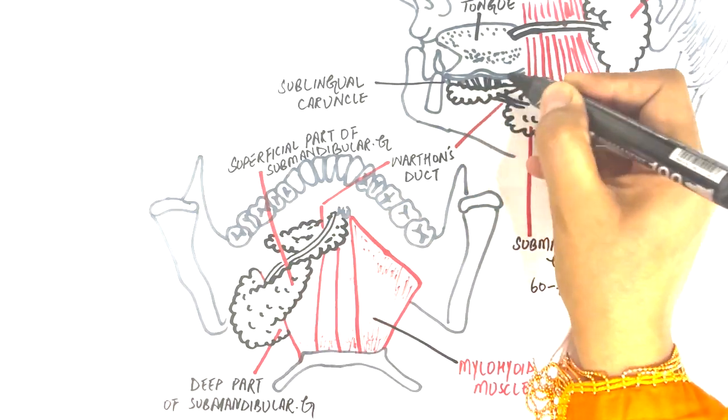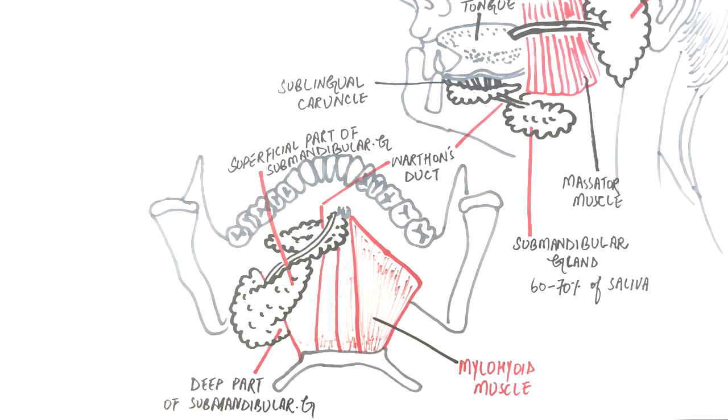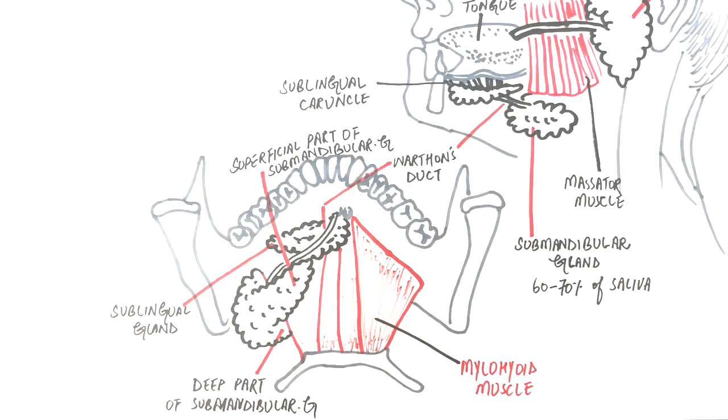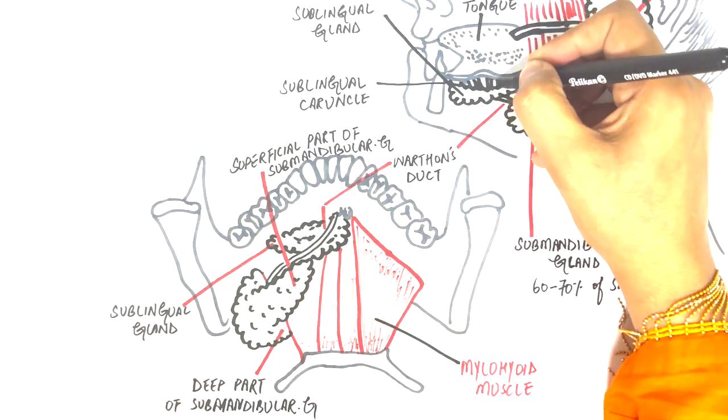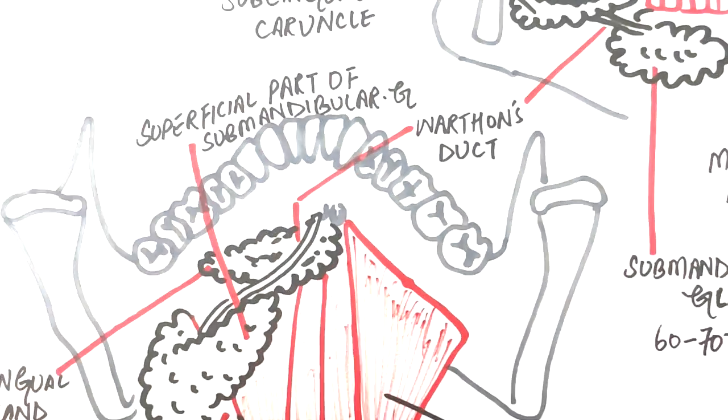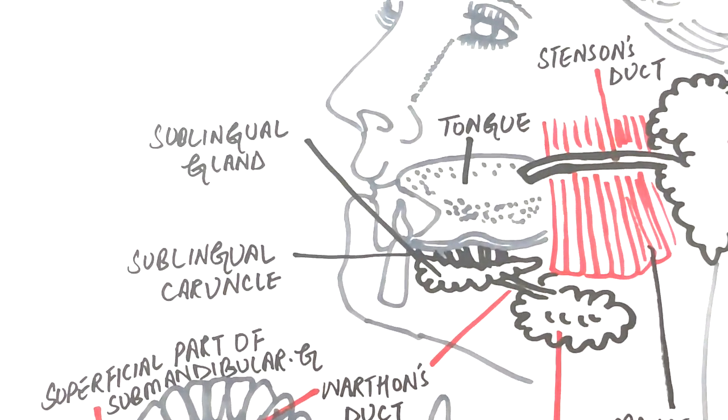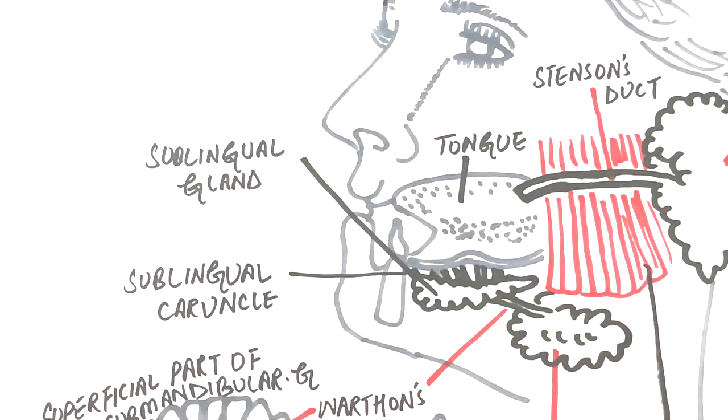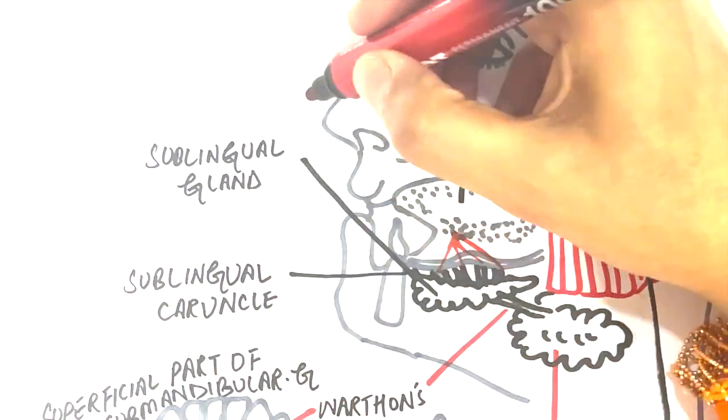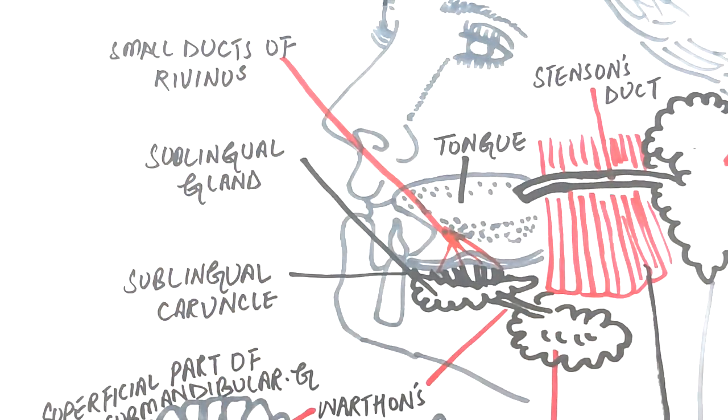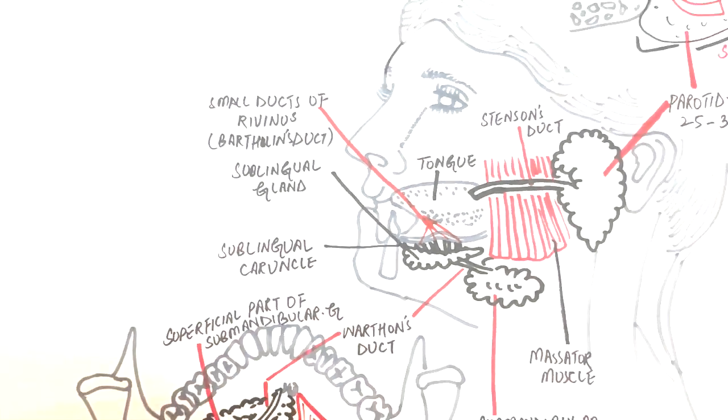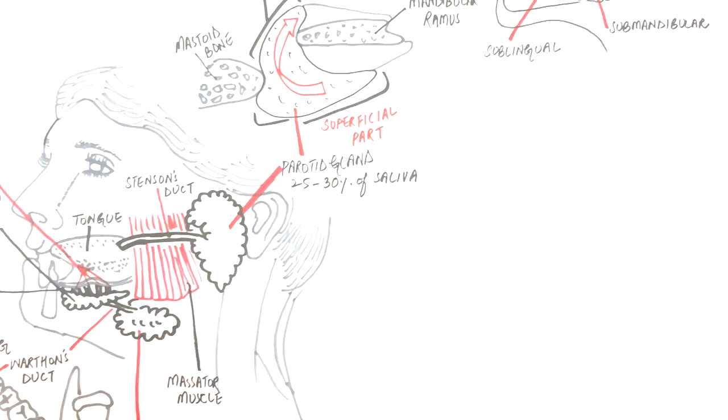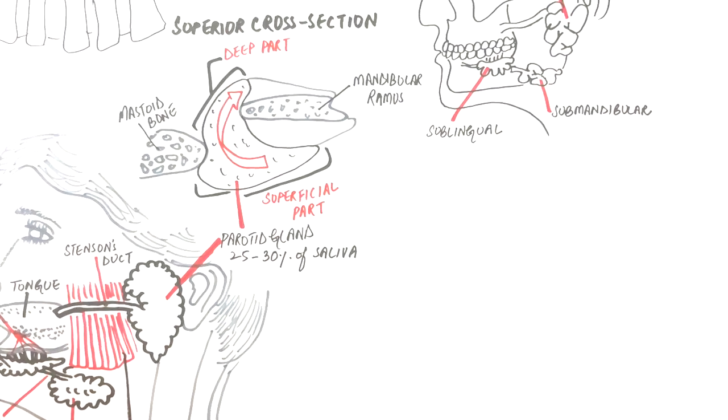The sublingual gland is the smallest of the major salivary glands. It produces 7 to 8% of the total amount of saliva. The gland is located at the anterior part of the floor of the mouth, between the mucosa and the mylohyoid muscle. This gland secretes its secretions through a series of small ducts called the ducts of Rivinus. The ducts of Rivinus often unite to form Bartholin's duct, and Bartholin's duct opens into the submandibular caruncle along with Wharton's duct of the submandibular gland.